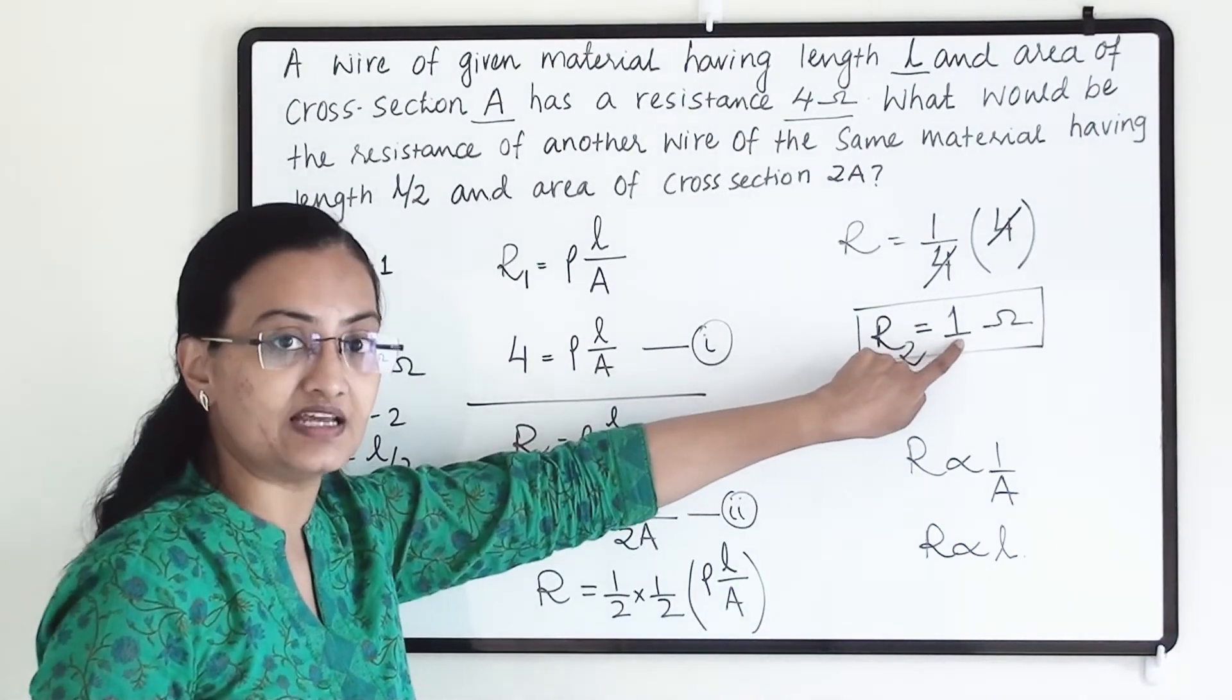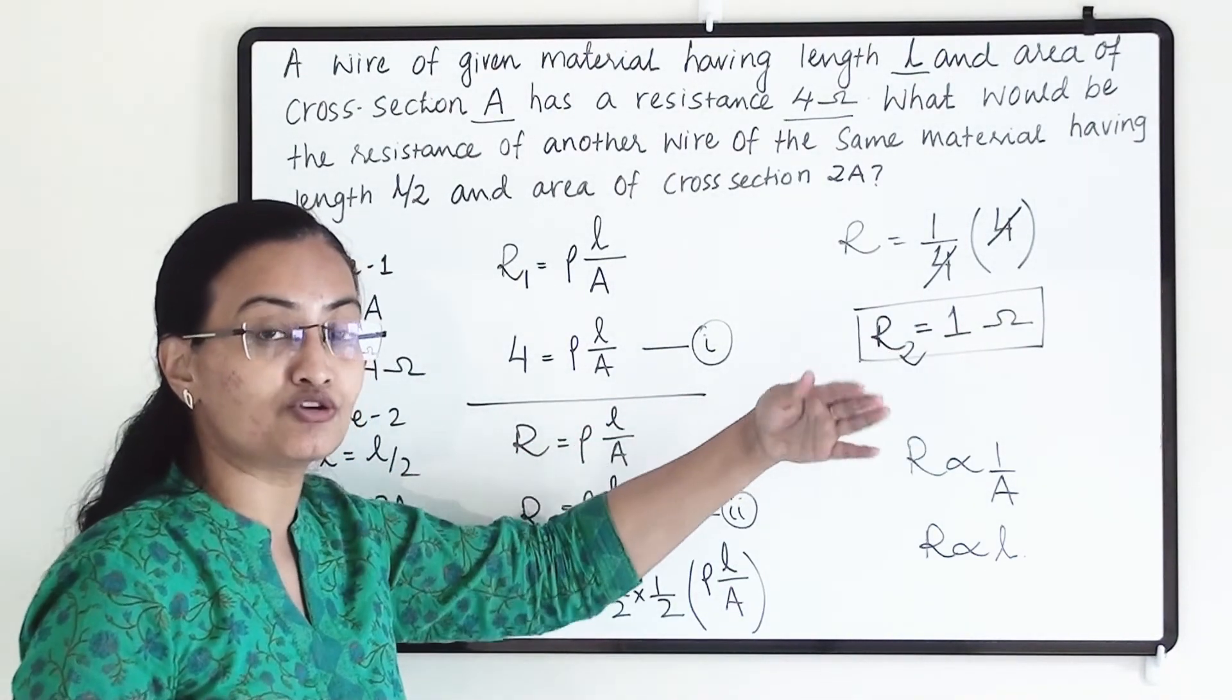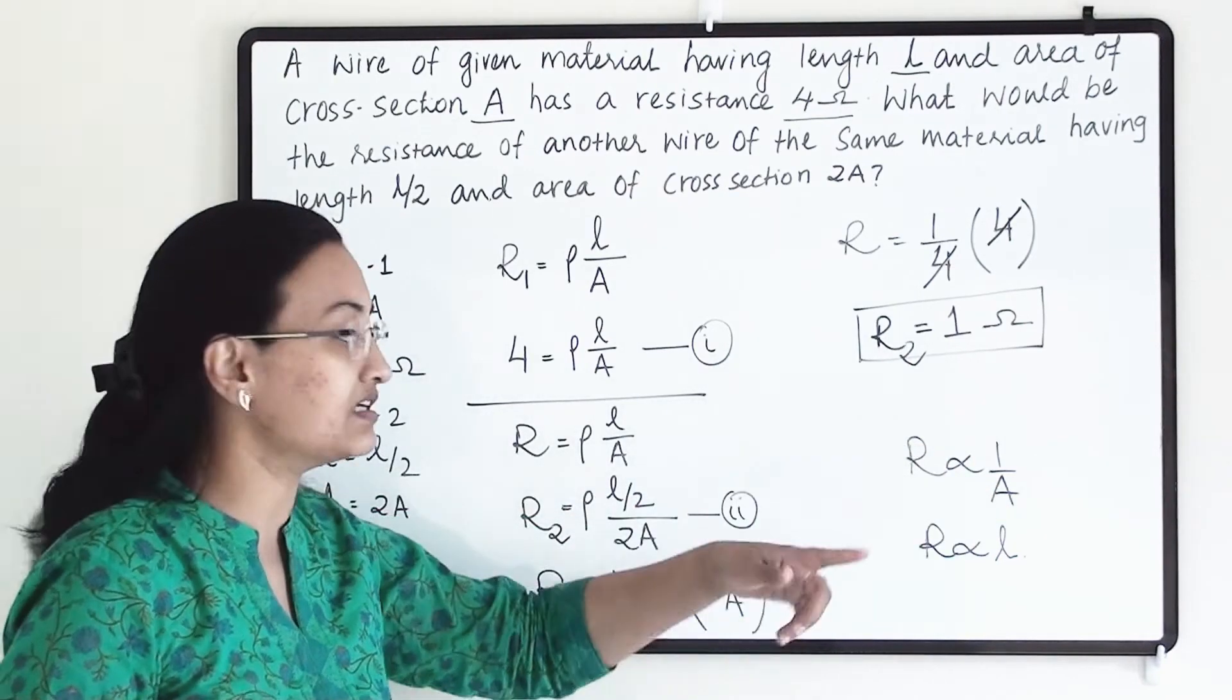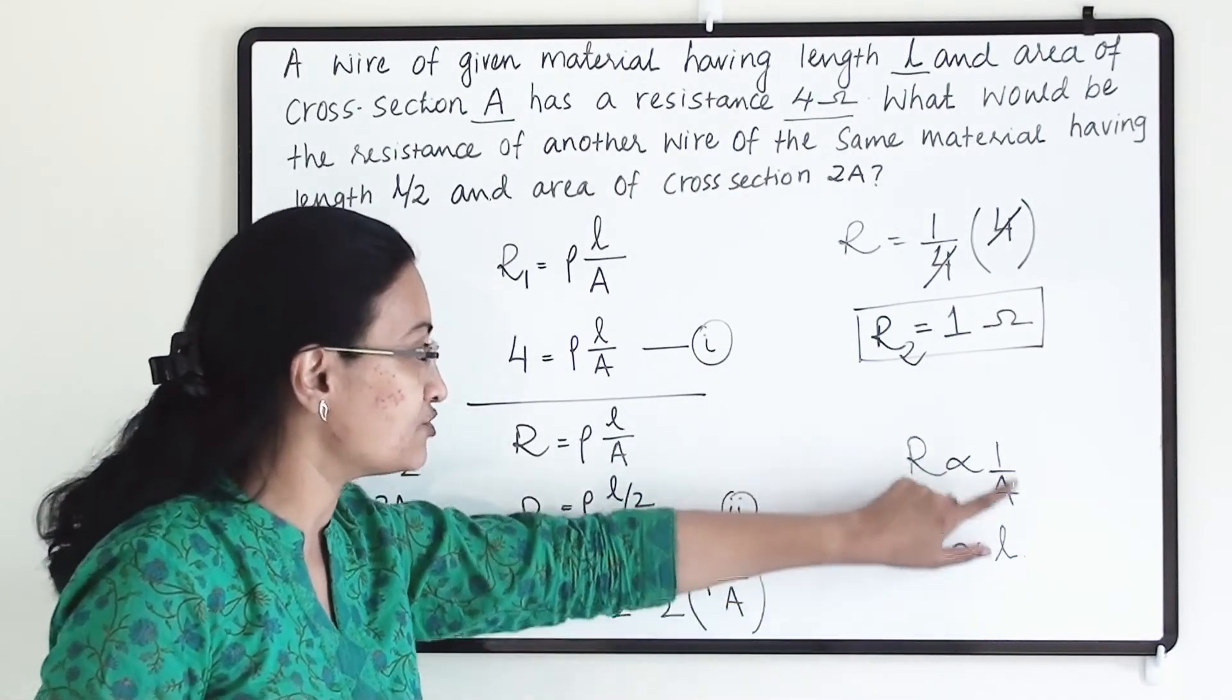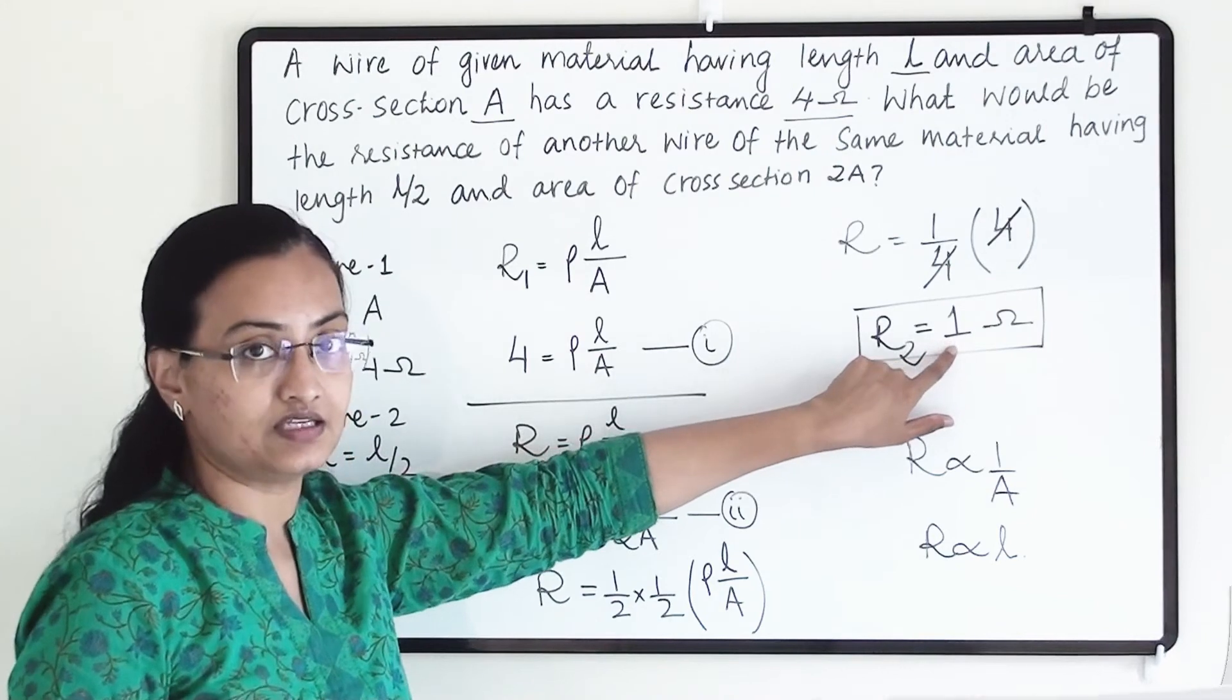So that's why resistance has even decreased more. That's why resistance is very less here because it has decreased because of the area and it has decreased because of the length. So that's why resistance is very less here.